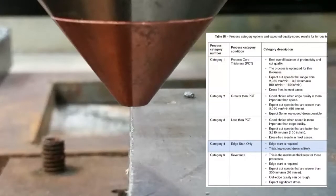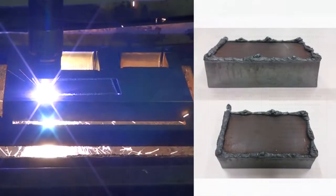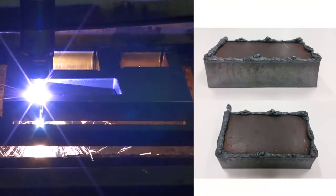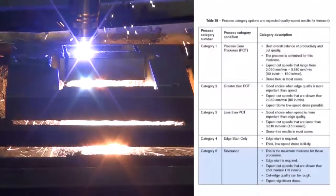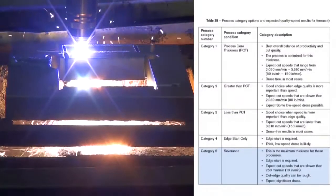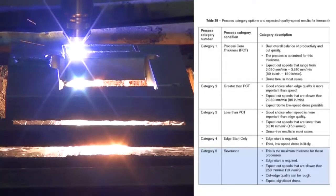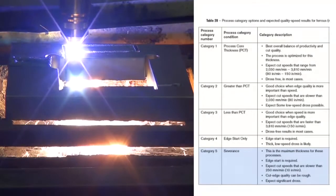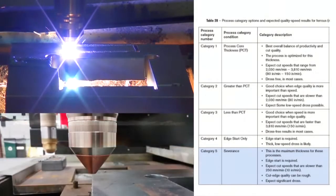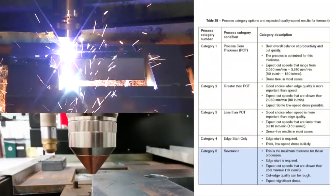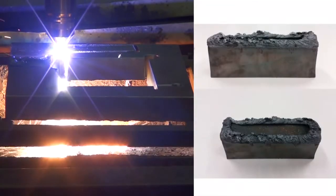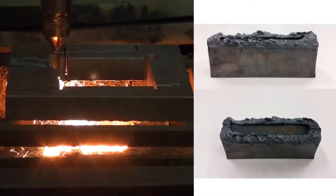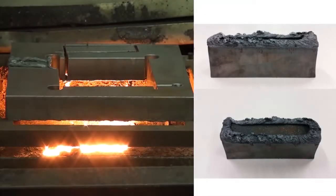Category 4 signifies thicknesses where edge start is needed. Lower speeds and thick low-speed dross is likely. Category 5 represents severance cut — this is the maximum thickness for the process. Again, edge start will be needed. Cut quality and speed will both be very low with heavy dross. Only use this process when quality is not a concern.